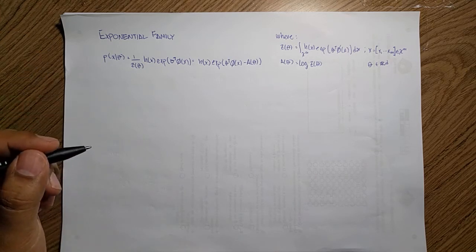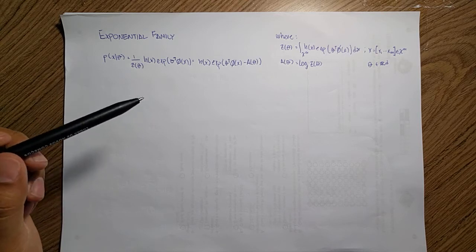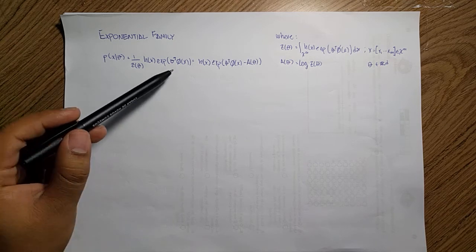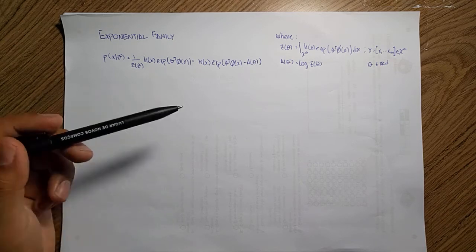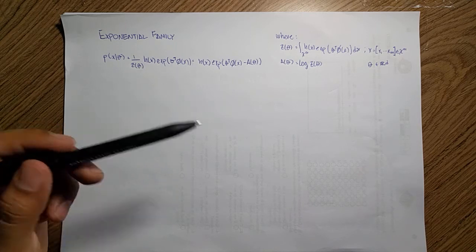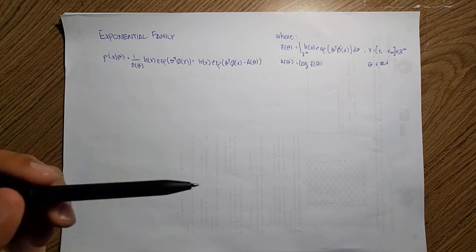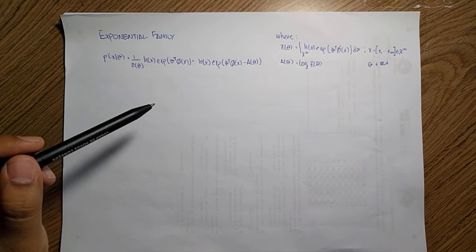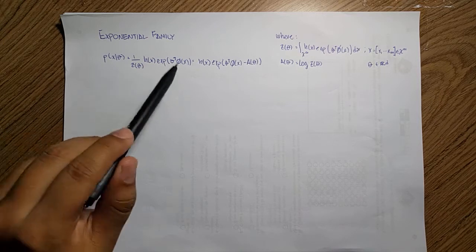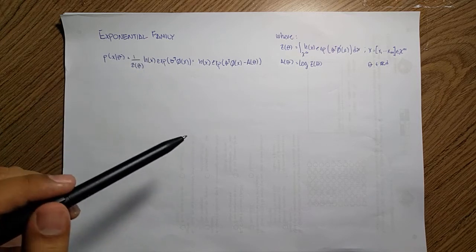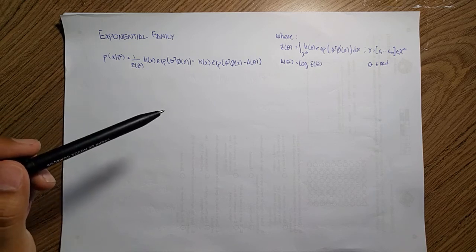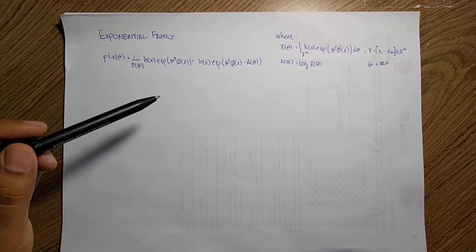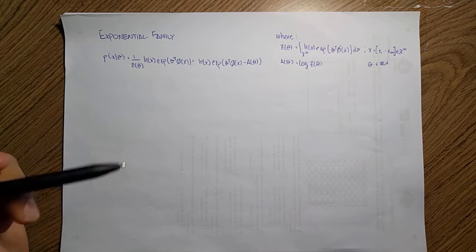We will be discussing these parameters within this session. We will call theta the natural parameters or the canonical ones. And phi(x) is just a function of x that transforms our data and returns the sufficient statistics. If we remember, the sufficient statistics are the values we need to represent the whole distribution. For instance, for the Gaussian, with two sufficient statistics — the mean and the standard deviation — I am able to define the whole distribution without needing the full dataset.